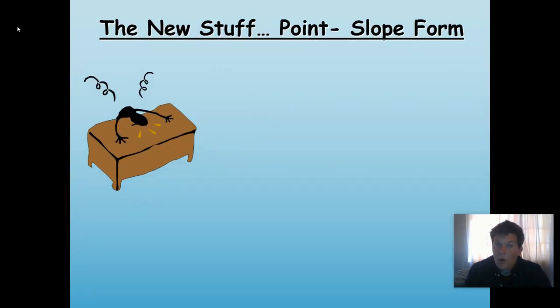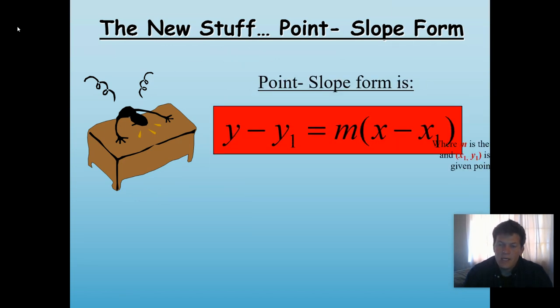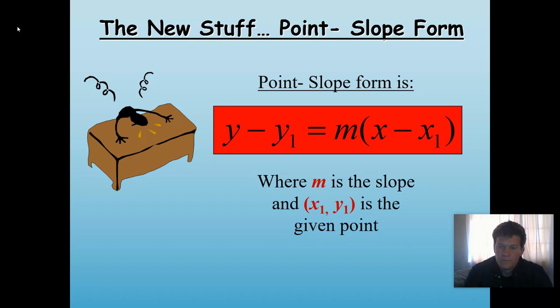New stuff is this point-slope form. This form is y - y1 = m(x - x1), where m is the same as before, it's our slope. But x1 and y1 is the given point on our line. So it's not given that it's the y-intercept anymore. It's just any point that's on the line of our graph.